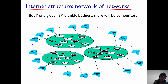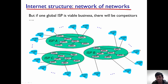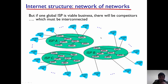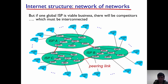The next question is: these global ISPs now need to be able to talk to each other. For example, if somebody connected to one access ISP wants to talk to another access ISP — ISP A and ISP B — they have to be connected to each other. The way this interconnection works is by using peering links. The peering links, shown in red on the slide, are governed by economic agreements relating to how much traffic these global ISPs are willing to share with one another.